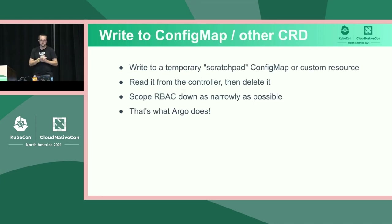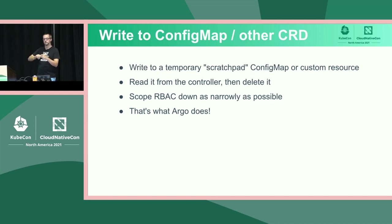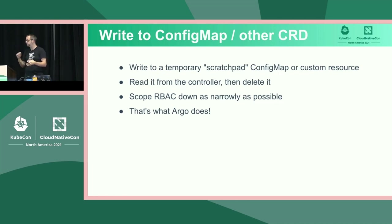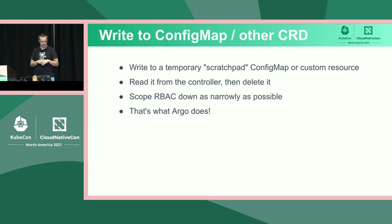Something we've started looking into: instead of writing to the termination message path, we have the injected entrypoint contact the API server and write to a config map. The config map max size is much larger than 12K. For every task run, we create a config map to hold its results. The entrypoint writes that data to the config map, and we can narrowly scope the RBAC so the entrypoint can only write to it and the controller is the only one allowed to read from it — preventing cross-task contamination. That's essentially what Argo Workflows does already.